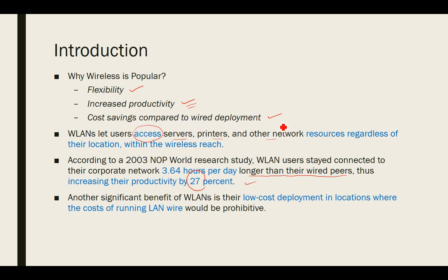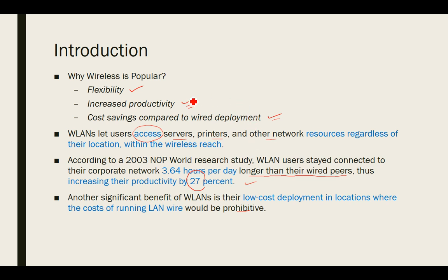The final benefit is cost saving. A significant benefit of wireless LAN is low-cost deployment in locations where running a wired LAN would be cost-prohibitive. Where more cabling is needed and costs are increasing, you can use wireless devices instead. The total cost of ownership of a wireless LAN is very low compared to the benefits it brings, provided it is secured and managed properly. That is why wireless is so popular.